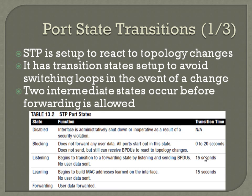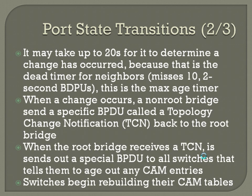It may take up to 20 seconds to determine that a change occurred, because that's the dead timer for neighbors. If it misses 10 two-second BPDUs — a total of 20 seconds — this is the max age timer. The 20 seconds is worst case. If a link goes directly down it will know immediately. This scenario is more about when the link still appears up but the neighbor switch has some internal problem and can't send BPDUs. After missing 10 of them, it finally determines that even though the link looks physically up, the switch on the other side is having a problem, and considers it a dead link.